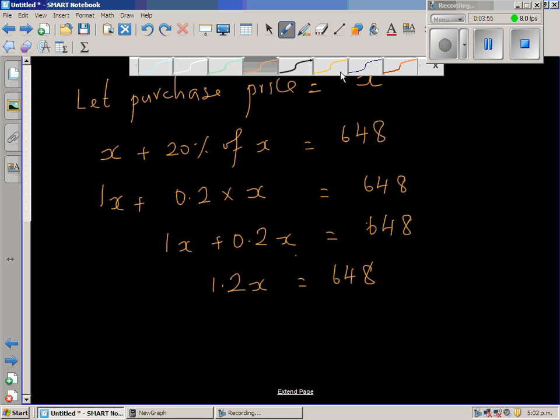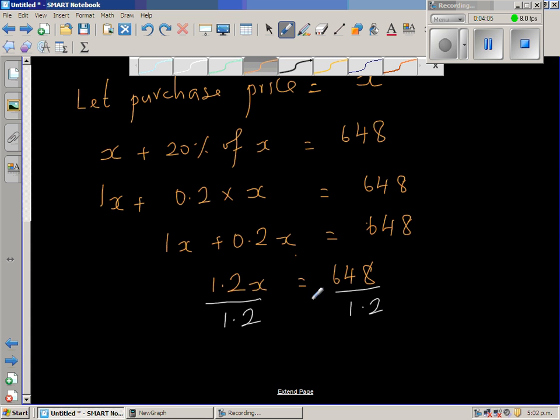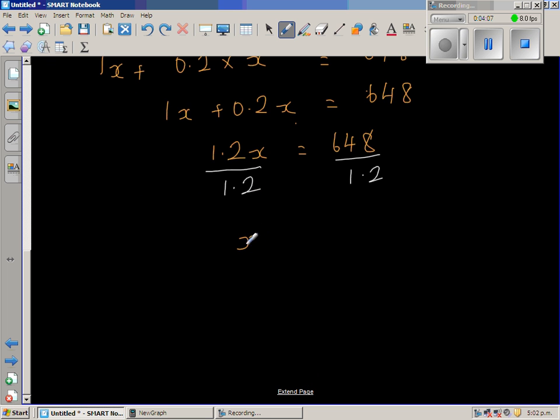I'm going to divide both sides by 1.2. So if I divide this side by 1.2, I have to divide this side by 1.2. So x equals 648 over 1.2.